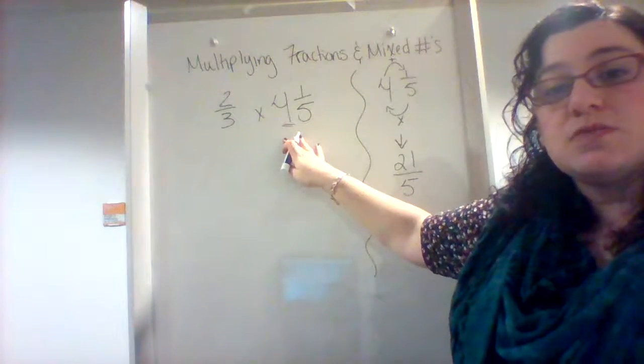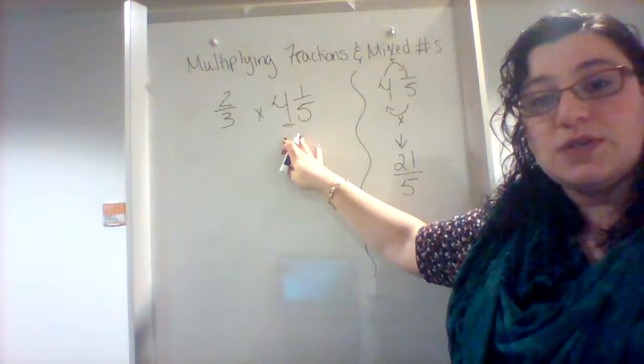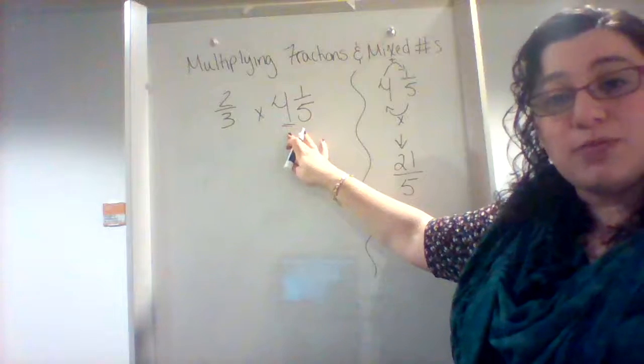So the easiest way to go about this is we need to get rid of the whole number, and we can do that by changing a mixed number into an improper fraction.